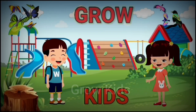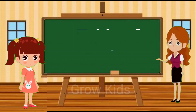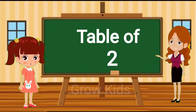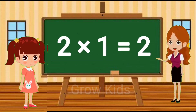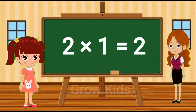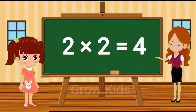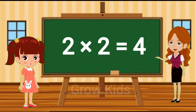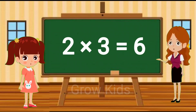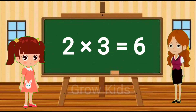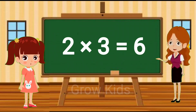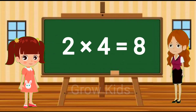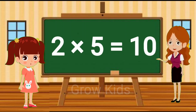GROW KIDS Table of Two. Two ones are two. Two twos are four. Two threes are six. Two fours are eight. Two fives are ten.